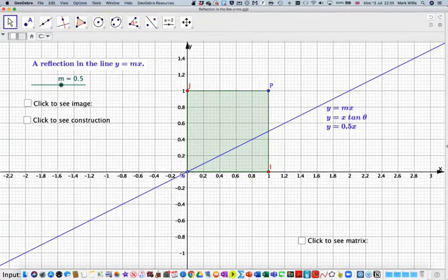In this video we're going to look for a general matrix which represents the reflection in a line y equals mx. So here we have a line y equals mx. At the moment m is 0.5.